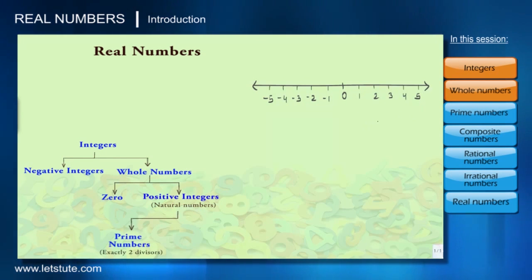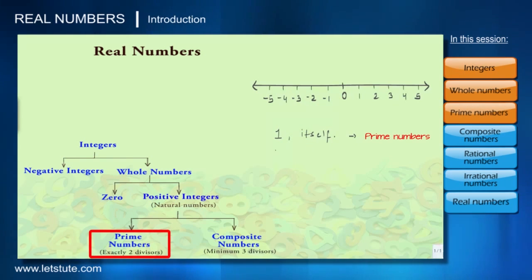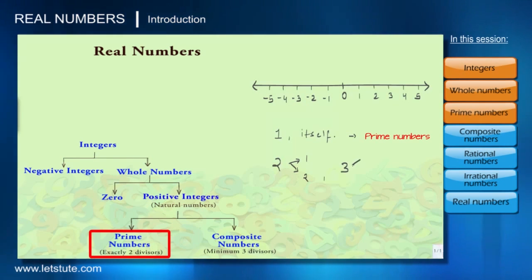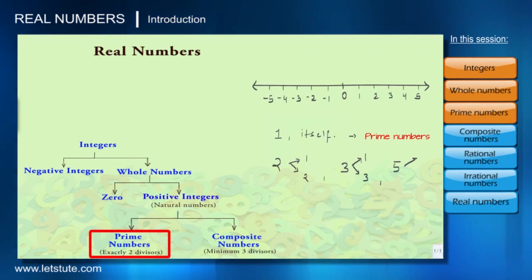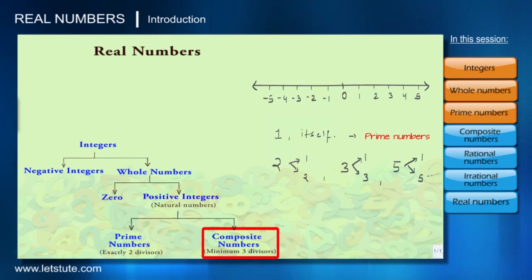Now these positive integers are further classified into prime numbers and composite numbers. Positive integers which have exactly two divisors — that is, the number one and the number itself — are called prime numbers. For example, the number 2 has exactly two divisors: 1 and itself. Similarly, 3 has two divisors: 1 and itself. 5 has exactly two divisors: 1 and itself. So 2, 3, and 5 are all prime numbers.